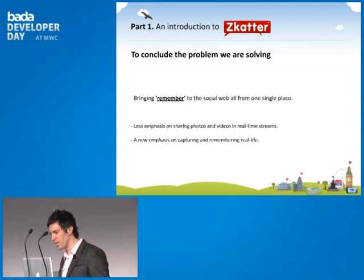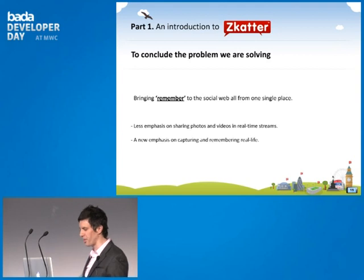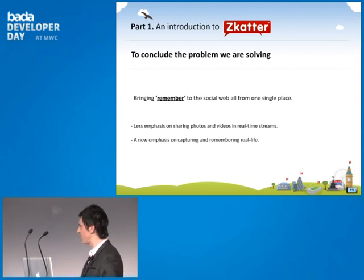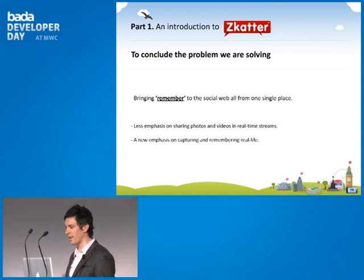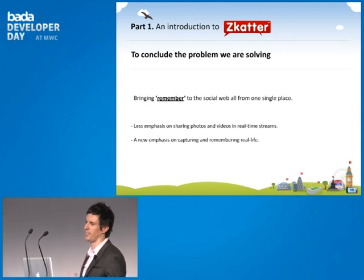To sum up Scatter, it is a genuine and accurate shared experience for sharing publicly across the social web and within our search platform, or within private networks — always in real time. The problem we're solving is bringing 'remember' to the social web: less emphasis on sharing photos in real time, and a brand new emphasis on aggregating and remembering real life around keywords, places, hashtags, and events.